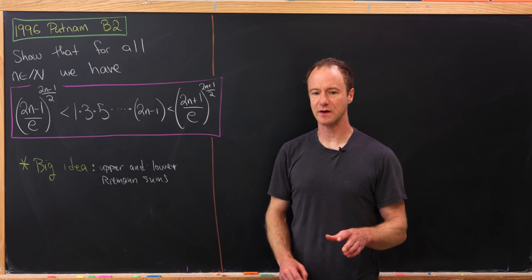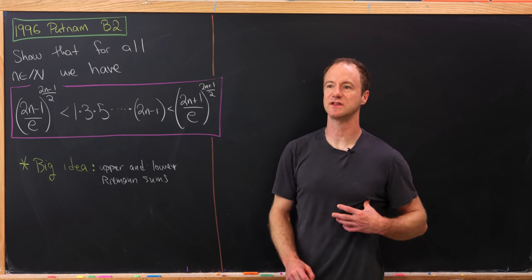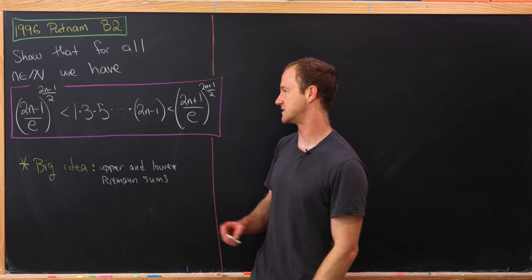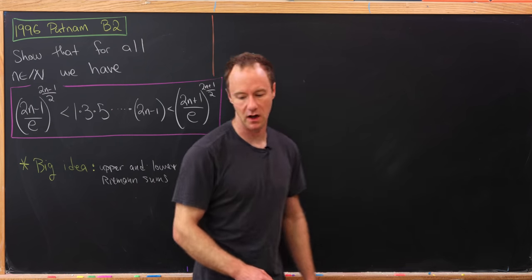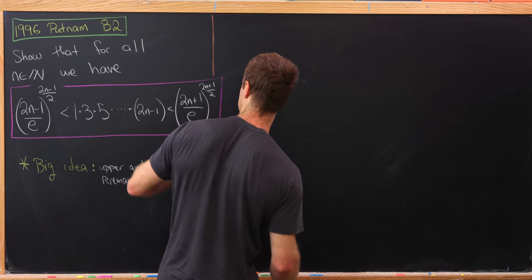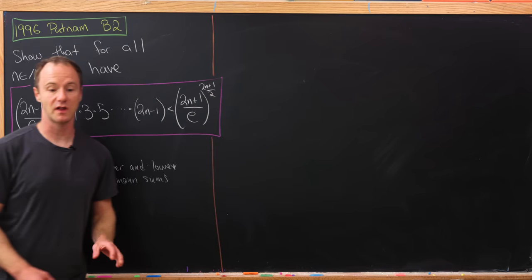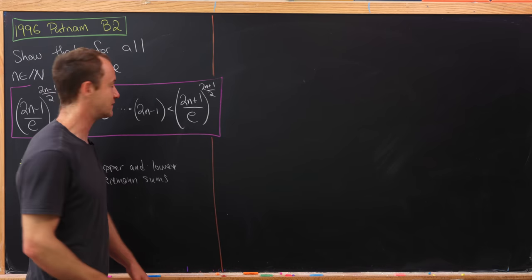Well, anytime you see a product, you often would like to turn it into a sum because it's easier to work with sums. And how would we turn this into a sum? Well, it's by taking the logarithm. So let's take all parts of this inequality and plug them into the natural logarithm and see what we get.